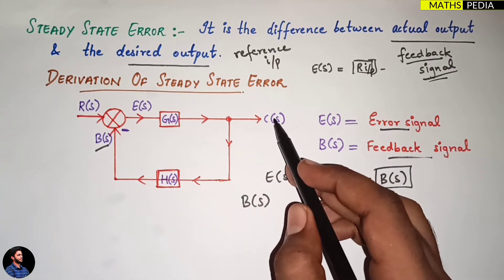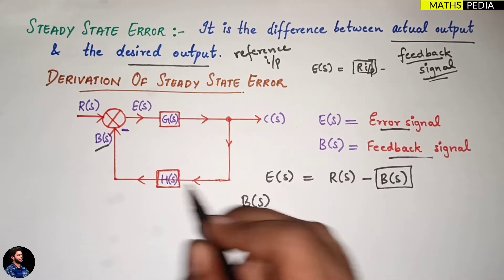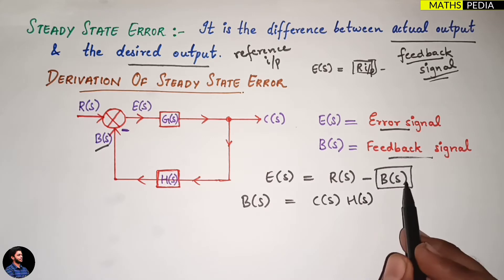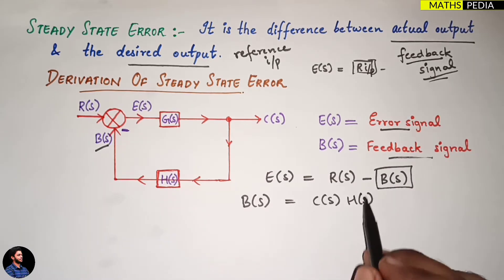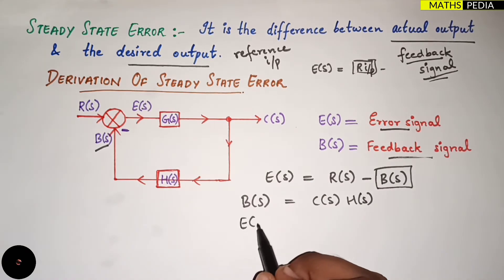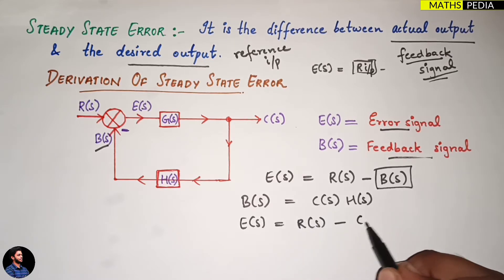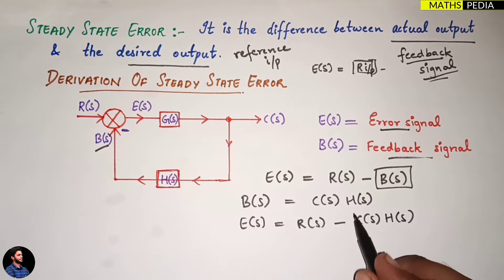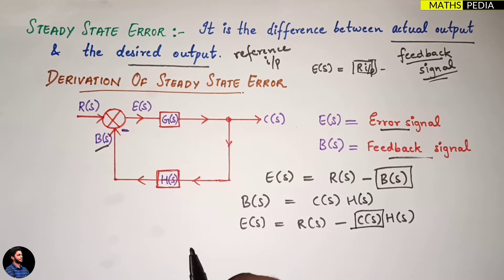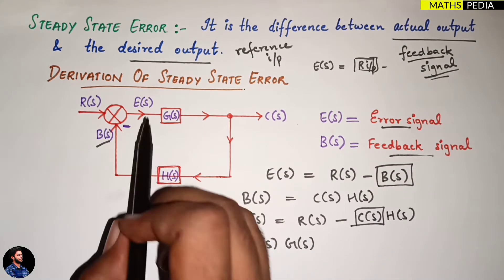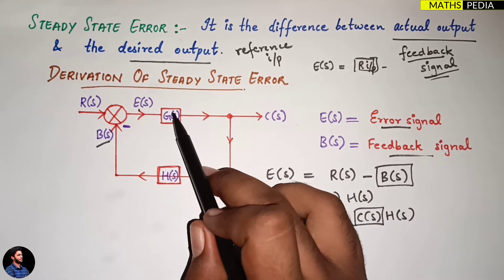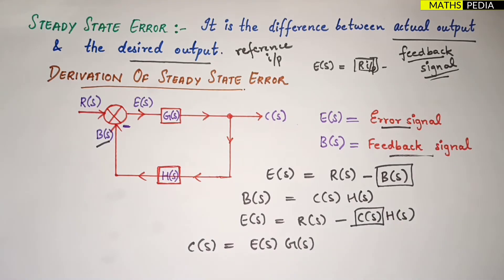Substituting B(s) = C(s)·H(s) into E(s) = R(s) − B(s), we get E(s) = R(s) − C(s)·H(s). Now, C(s) has another formula: C(s) = E(s)·G(s), as can be seen in the block diagram — the output equals the error signal multiplied by the forward path transfer function G(s).